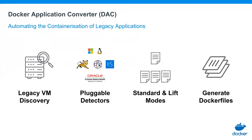How can Docker help automate the containerization process? Docker has a new tool called Docker Application Converter — DAC. When using Docker services or any of our certified partners, they will have access to DAC. DAC runs on a legacy virtual machine and uses pluggable detectors — for IIS, Tomcat, WebSphere, and others — to identify the application and containerize it for you, creating a Docker file that defines what the application looks like in a container.